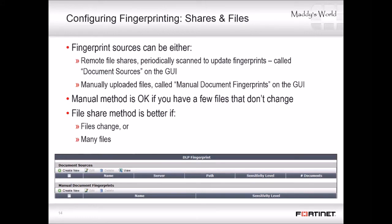Once you've defined custom sensitivity levels, you're ready to define your fingerprints. Fingerprinting can be done two ways: in the GUI you can upload files to the FortiGate so it can create and store checksums, or you can configure FortiGate to connect to a file share periodically. Each time, FortiGate can automatically recreate checksums for all files in the share or retain old fingerprints in case an old version is still circulating. Fingerprinting via file share is useful if you must add many files or if your files change periodically. After fingerprints are defined, go to a DLP sensor's filter where the type is File and select a file sensitivity level.